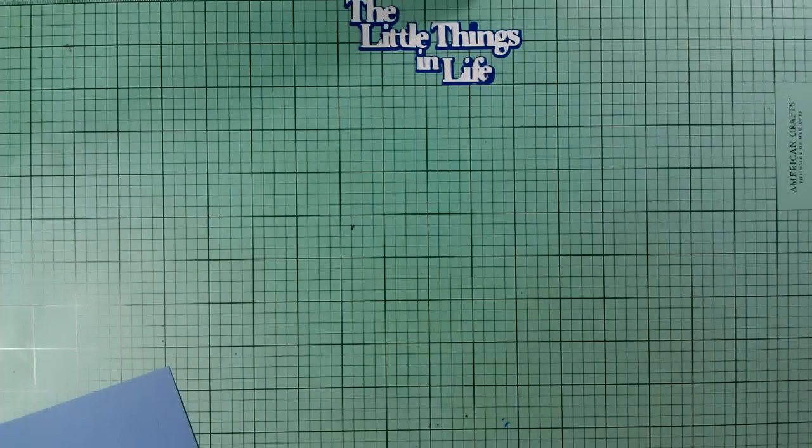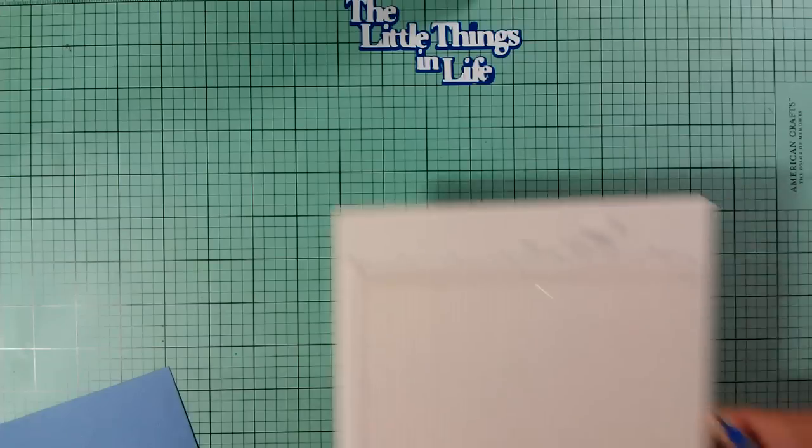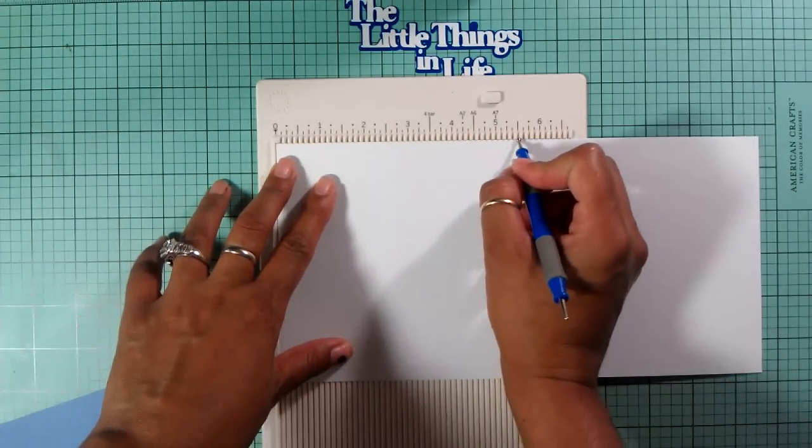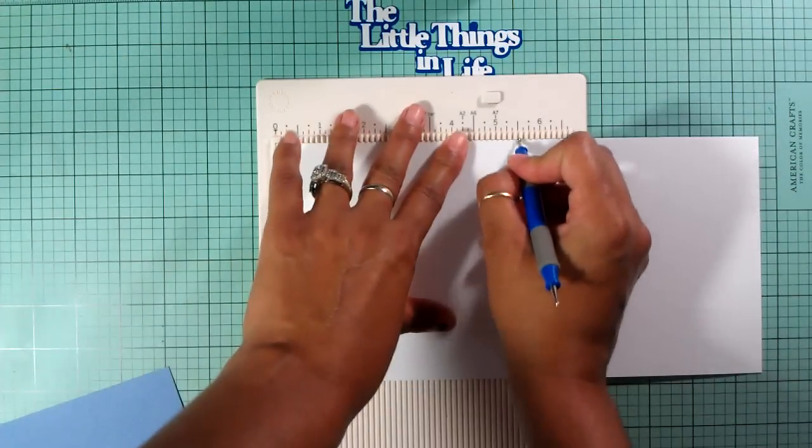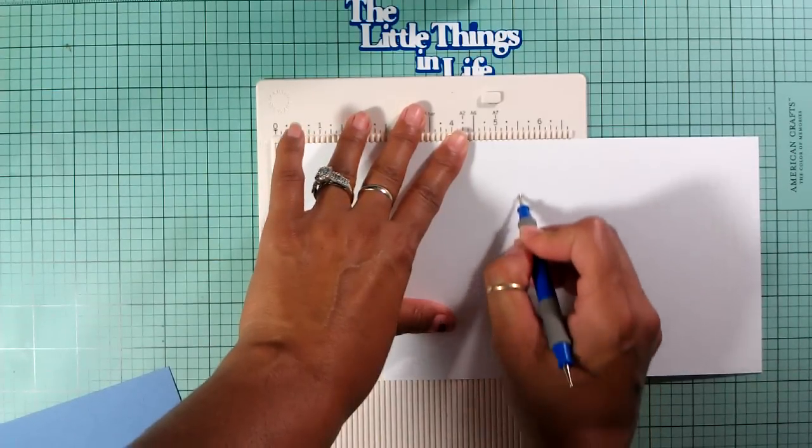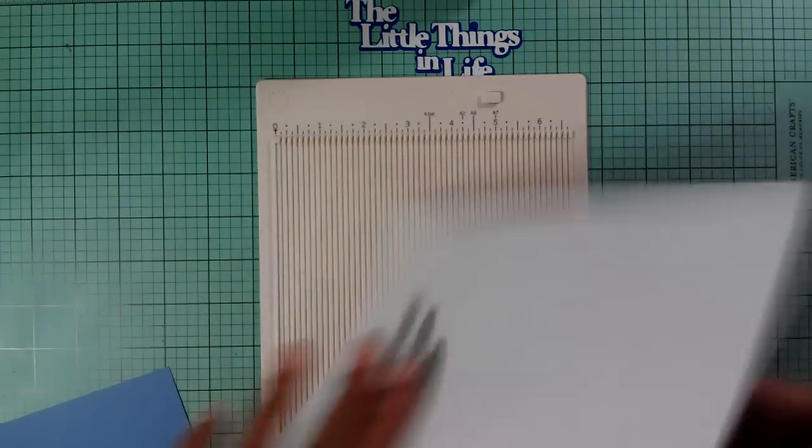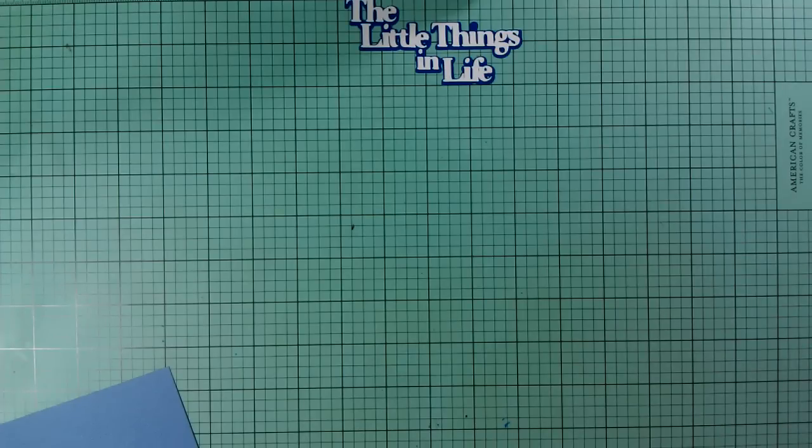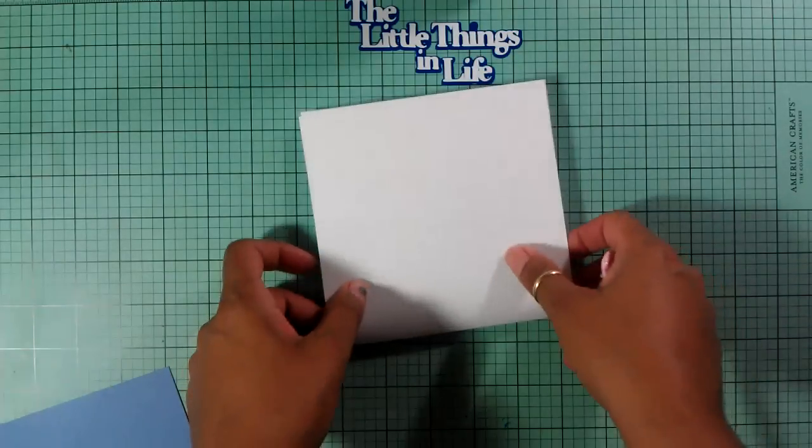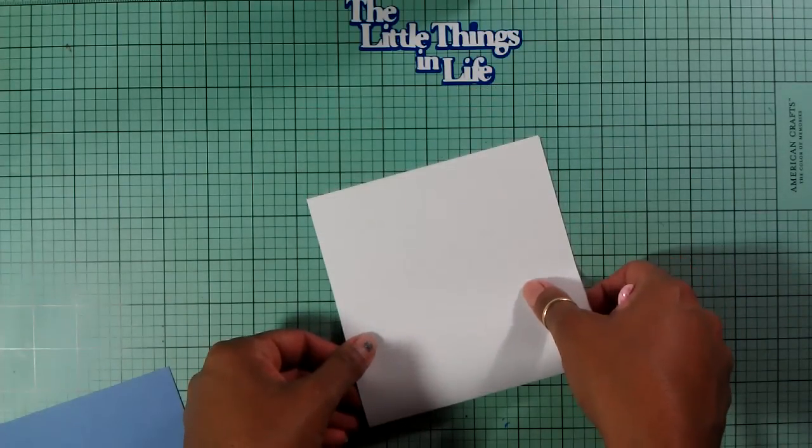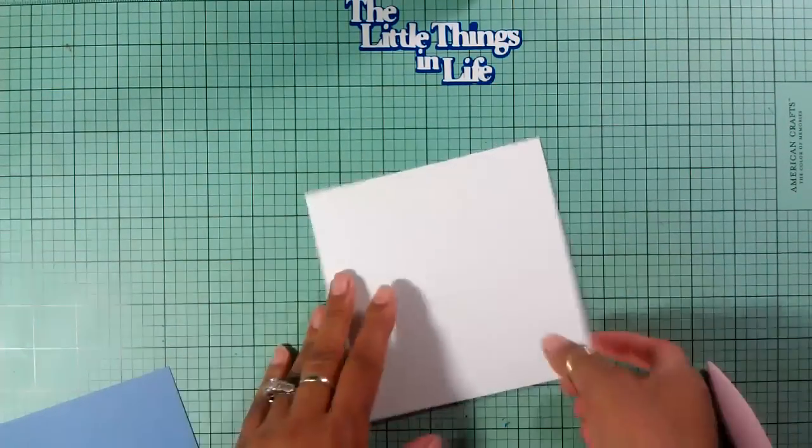My card is going to be five and a half by five and a half. I've got this white cardstock cut at five and a half by eleven, and I'm gonna score it at five and a half. That'll make a five and a half by five and a half square card.